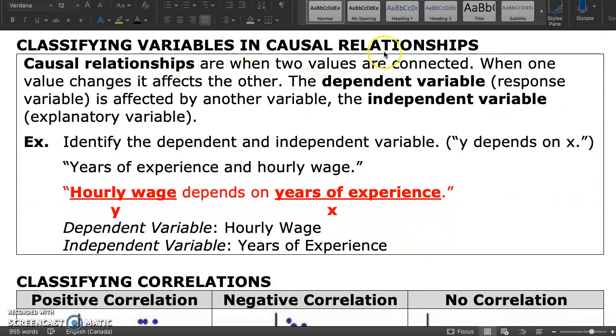Classifying Variables in Causal Relationships. Causal relationships are when two values are connected. When one value changes, it affects the other. The dependent variable, or response variable, is affected by another variable. The independent variable, explanatory variable.